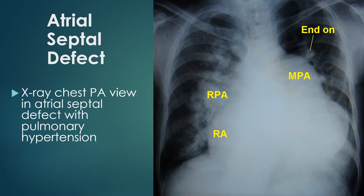Chest X-ray PA view in atrial septal defect with pulmonary hypertension. The main pulmonary artery is grossly dilated. Right pulmonary artery is also quite enlarged. Right atrial enlargement is seen as a shift of the right heart border to the right of the spine. Pulmonary vascularity is increased and prominent endon vessels are seen.